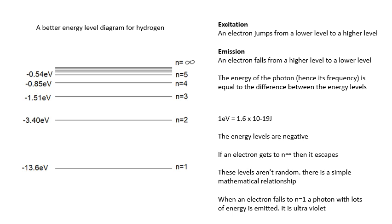When an electron falls to N equals 1 — if I get my pen out — if an electron went from there to there, you'd get a visible photon. If an electron went from a higher level all the way down to N equals 1, that's a big jump, so that photon is going to have lots of energy. In fact, any fall down to N equals 1 is going to give you an ultraviolet photon — those photons have loads of energy. The visible spectrum we were talking about comes from drops down to N equals 2. All the little drops to higher levels are actually infrared — they're invisible.